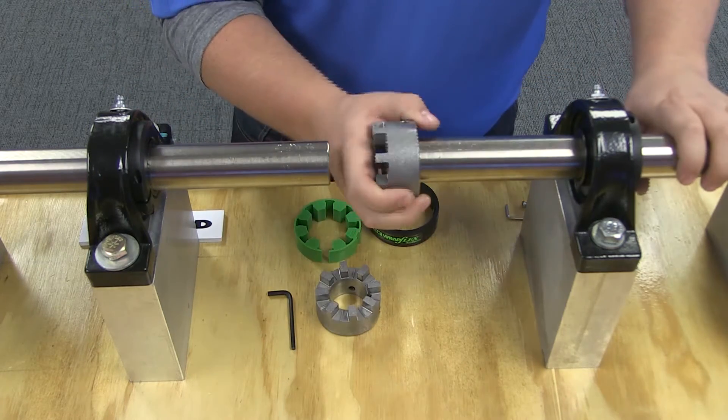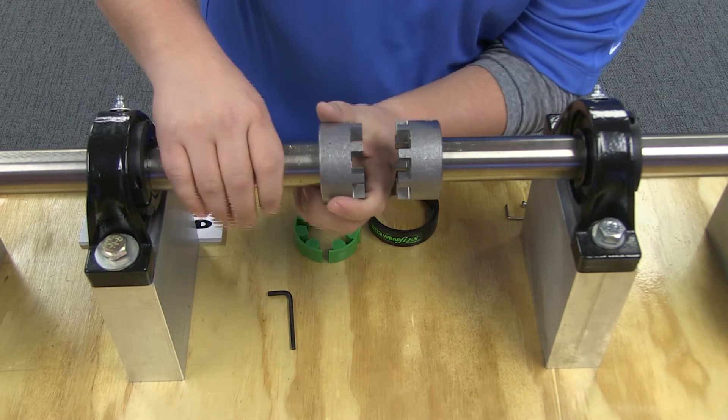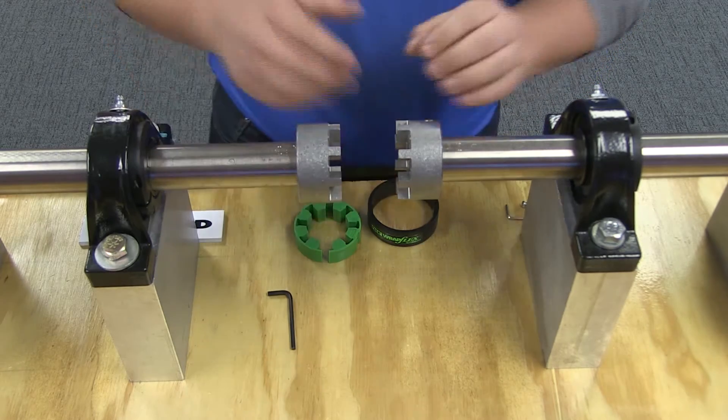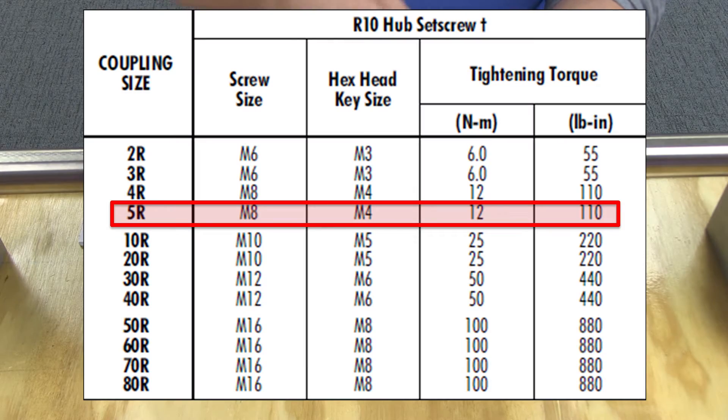The first step is to install the hubs. For clearance fit hubs, mount the hubs with the inner hub face flush with the shaft end and tighten set screws for each hub. Use the specified torque ratings shown in the table.